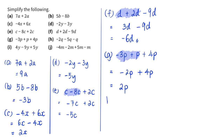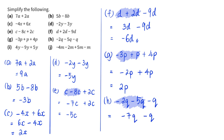For part h: negative 2q minus 5q minus q. Going from left to right: negative 2q minus 5q gives negative 7q, then we need to minus away one more q, so we get negative 8q for the final answer.